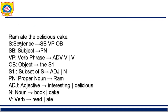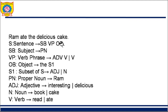For 'Ram ate the delicious cake,' the subject is Ram and the predicate 'ate the delicious cake' is the object plus verb. The first production rule: S (sentence) consists of SB (subject), VP (verb phrase), and OB (object). Subject gives us a proper noun. The verb phrase can contain adverb followed by verb, or only a verb. The object is defined as article followed by S1, where S1 can be adjective or noun. PN stands for proper noun.